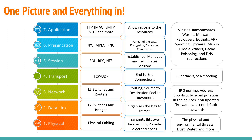The fourth layer is the transport layer, which uses TCP and UDP to ensure end-to-end connections. Two attacks are possible here: the RIP (Routing Information Protocol) attack, which is almost obsolete, and SYN flooding. SYN flood is a form of denial-of-service attack where the attacker rapidly initiates connections to a server without finalizing them. The server spends resources waiting for half-open connections, consuming enough resources to make the system unresponsive to legitimate traffic.